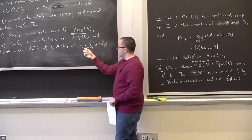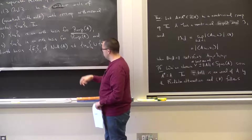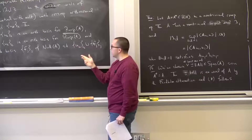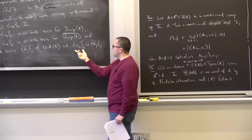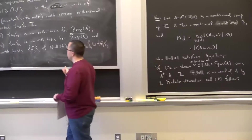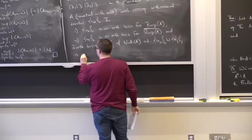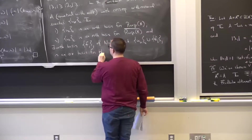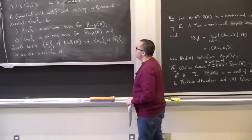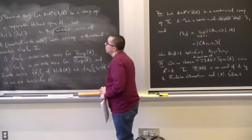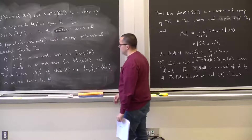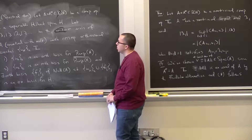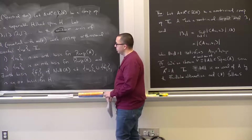Furthermore, there exists an orthonormal basis {fⱼ} of the null space of A such that {uₖ} ∪ {fⱼ} is an orthonormal basis for H. The two sets are mutually orthogonal because the fⱼ's correspond to eigenvalue 0 and the uₖ's to non-zero eigenvalues, so eigenvectors for distinct eigenvalues are orthogonal. Thus we can find an orthonormal basis for H consisting entirely of eigenvectors of the compact self-adjoint operator.